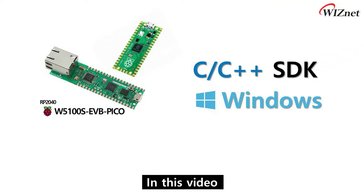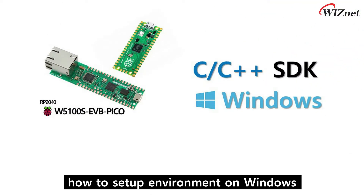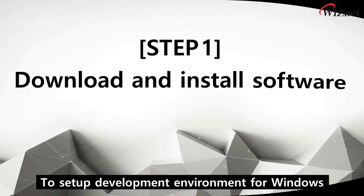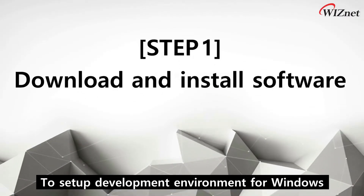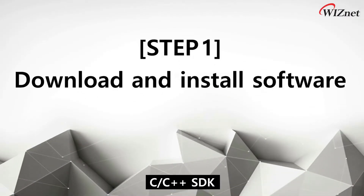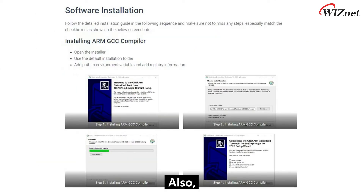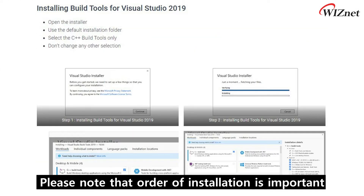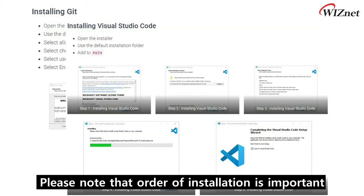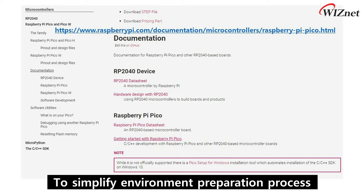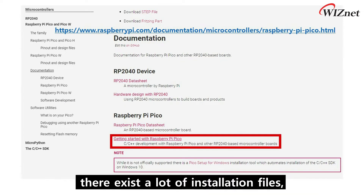In this video, we will show how to set up the environment on Windows. For other OS, we will prepare separate guides. To set up the development environment for Windows C/C++ SDK, it is necessary to install various software. Please note that the order of installation is important. To simplify the environment preparation process, there exist a lot of installation files.